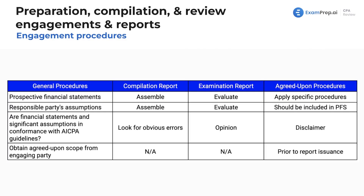Now let's talk about procedures for compilations, examinations, and agreed-upon procedures for prospective financial statements. In a compilation, you assemble the financial statements. In an examination, you evaluate them. In an agreed-upon procedure, you apply specific procedures. For the responsible party's assumptions: in a compilation you assemble them, in an examination you evaluate them, and for agreed-upon procedures those assumptions should be included in the prospective financial statements. In compilations, we look for obvious errors without doing significant testing or giving an opinion.